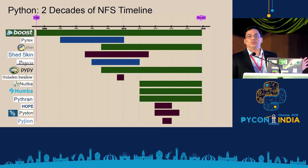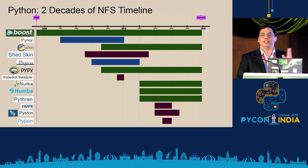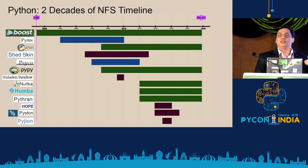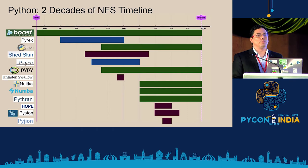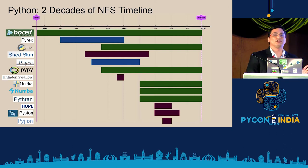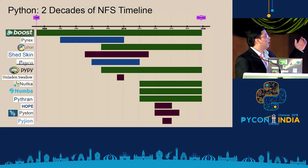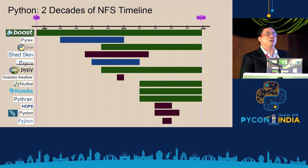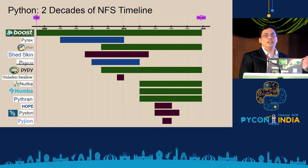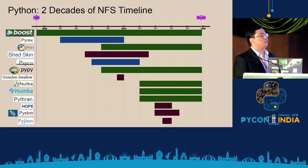This Gantt chart shows the timeline — I call it the two decades of need for speed. It lists all the Python projects that have come in the past two decades: the projects which still continue, those which gained a lot of popularity but have disappeared. The first was the Boost C++ libraries. Then came Pyrex, which died down, but Cython as we know it today was actually a fork of Pyrex so it still lives. Then came Shed Skin, a famous Google project that also faded around 2013.